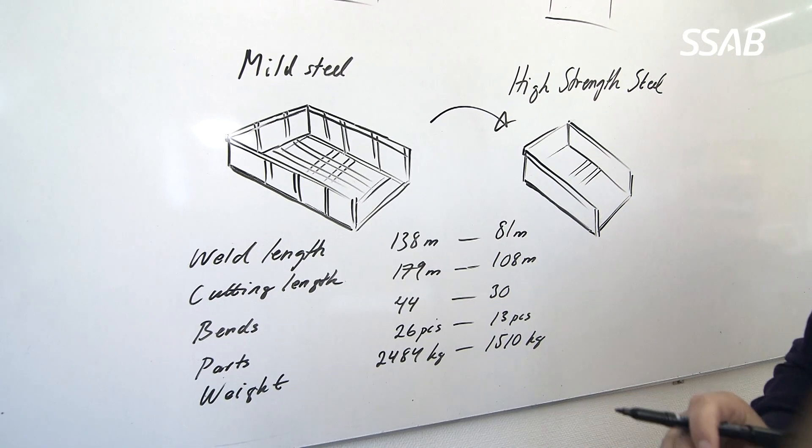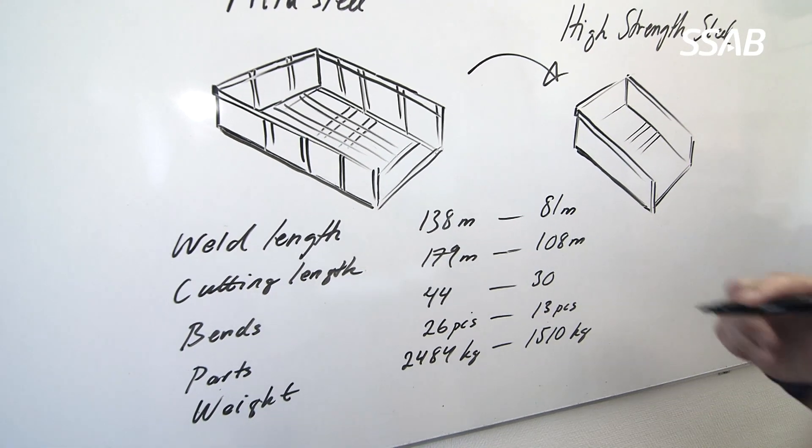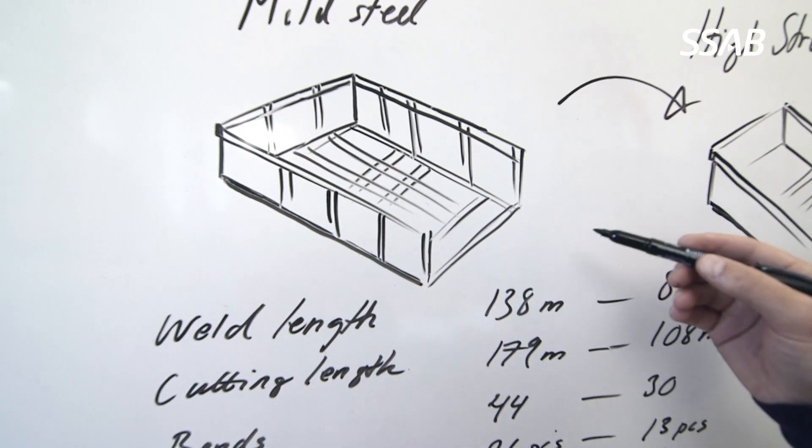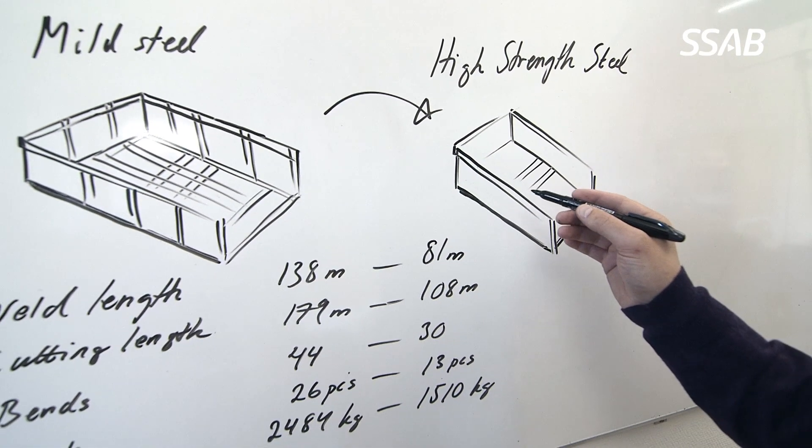Both of them have the same strength and the same performance. In the old one we have 138 meters of welding. In the new one we have only 81 meters of welding.